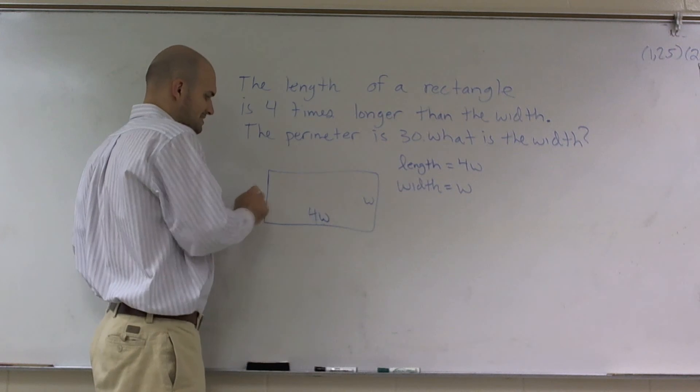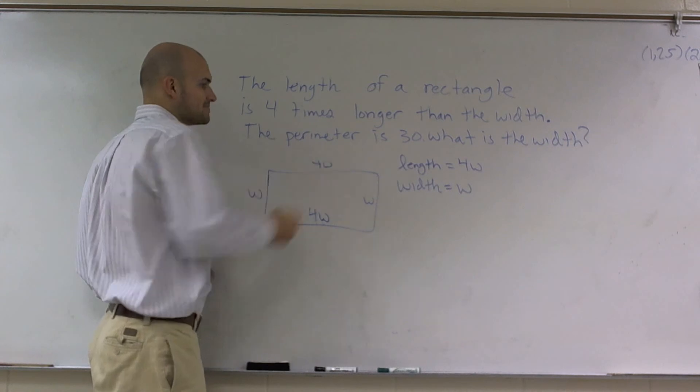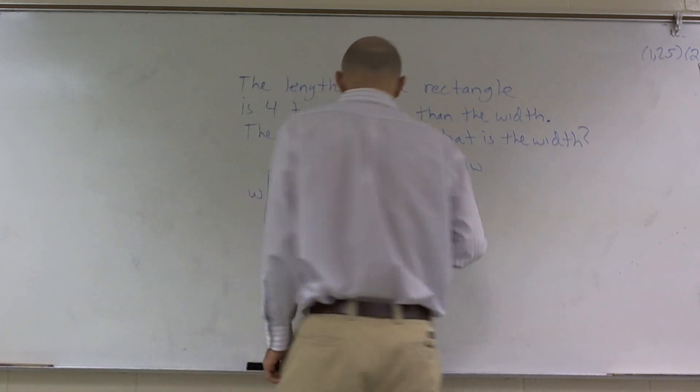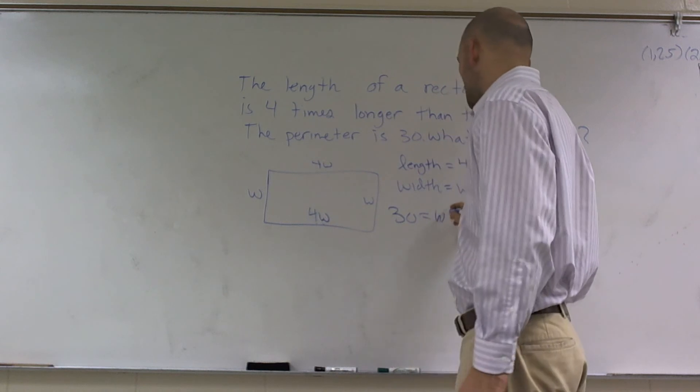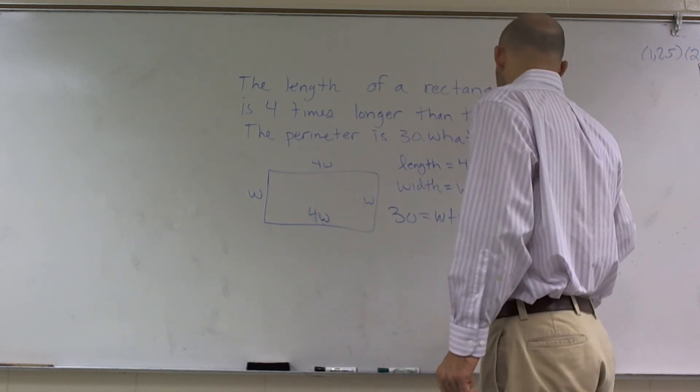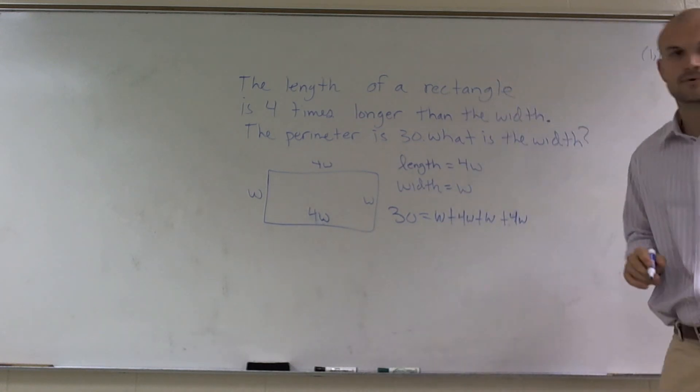So if that's w, that has to be w, since this is a rectangle. If that's 4w, that has to be 4w. So now it says the perimeter is 30 equals, I'm just going to add up all the sides, w plus 4w plus w plus 4w, all right?